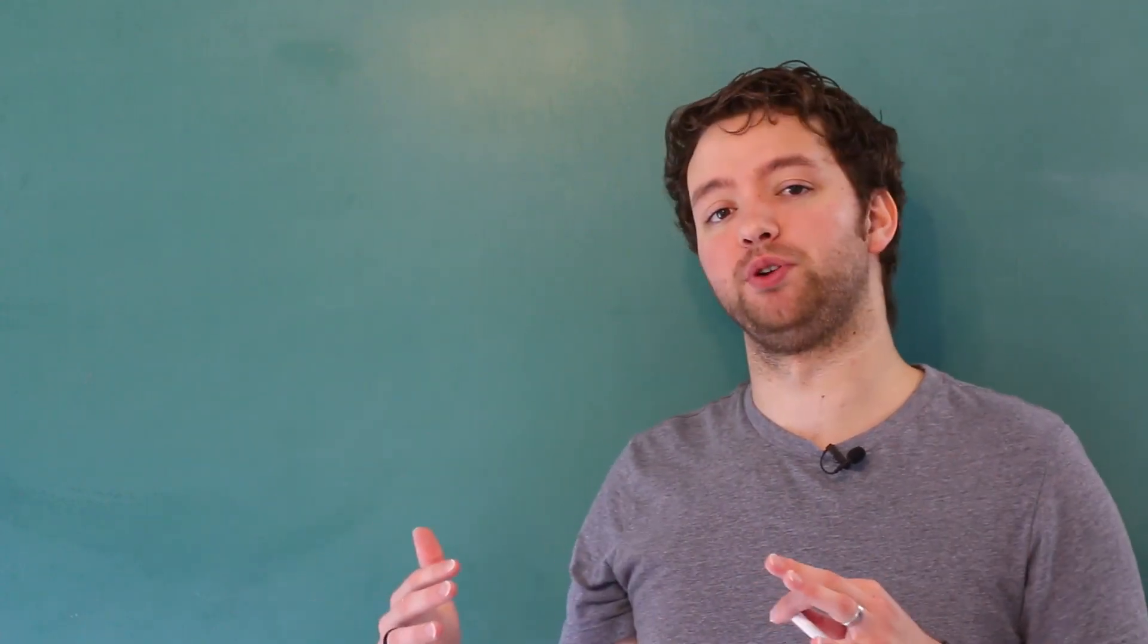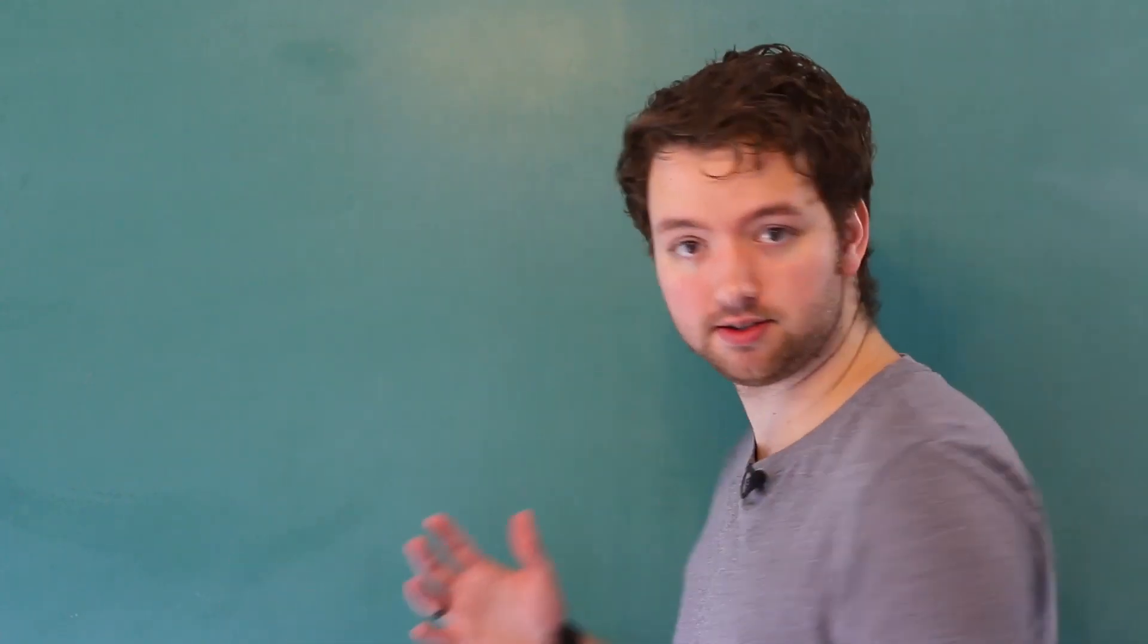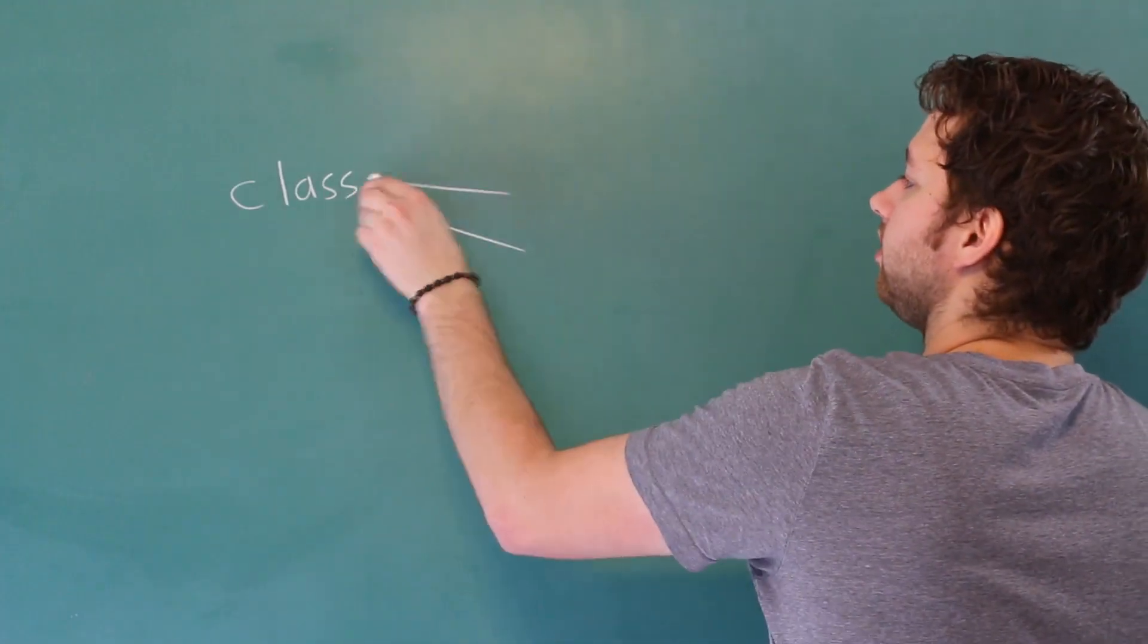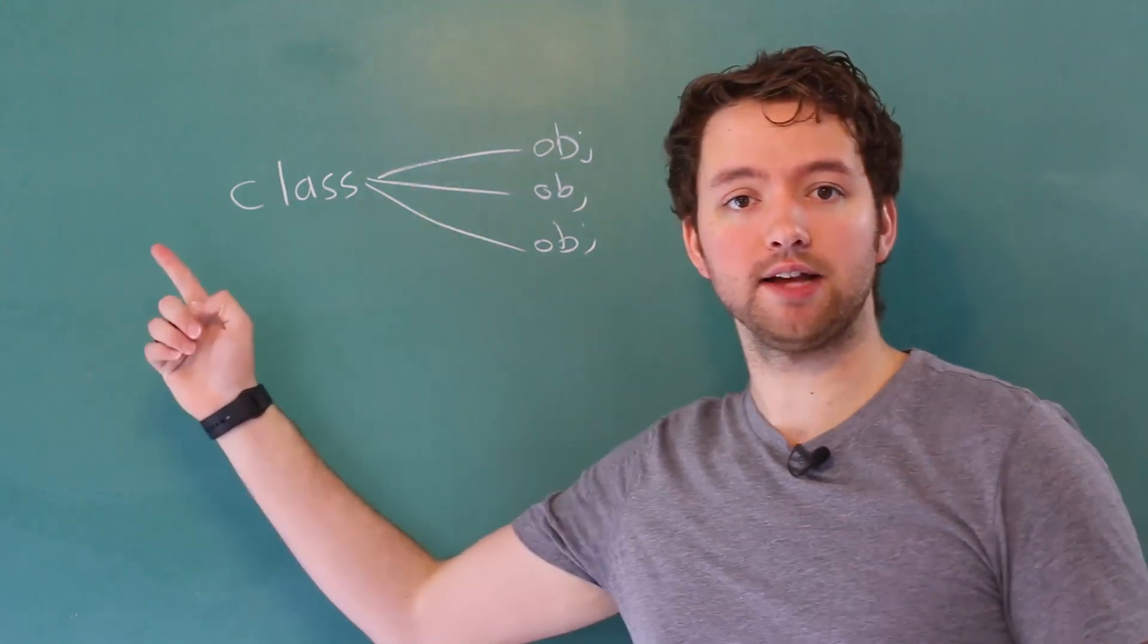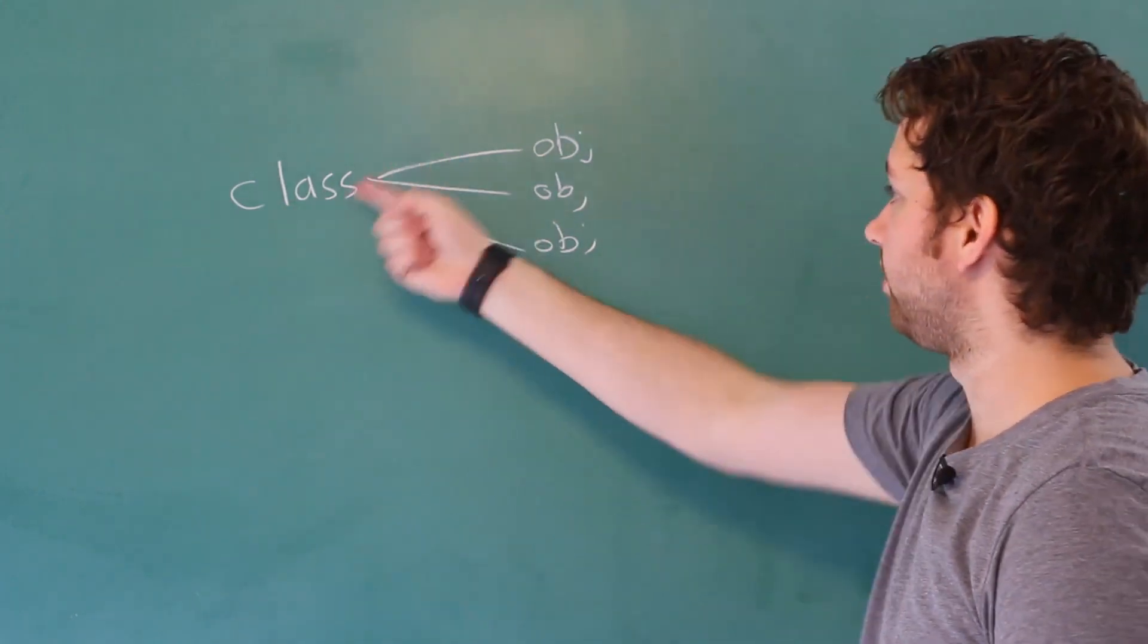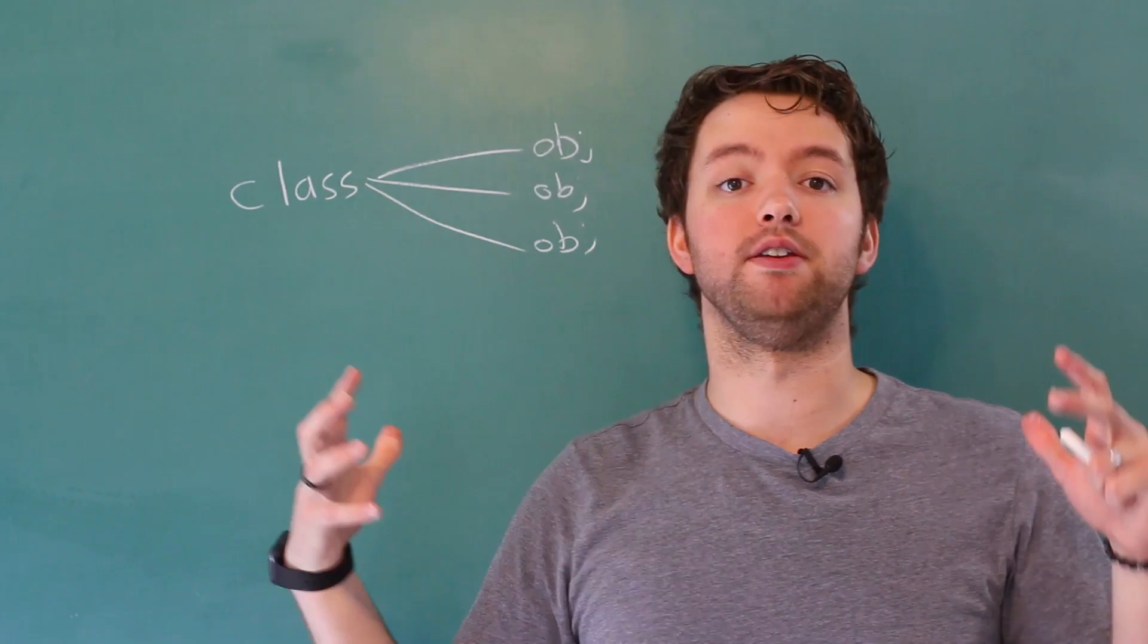When you visualize object-oriented programming you might think of something like this. You have a class and then you make instances of this class which are known as objects. When you define a method in the class, every time you instantiate this class into an object that method is made available.